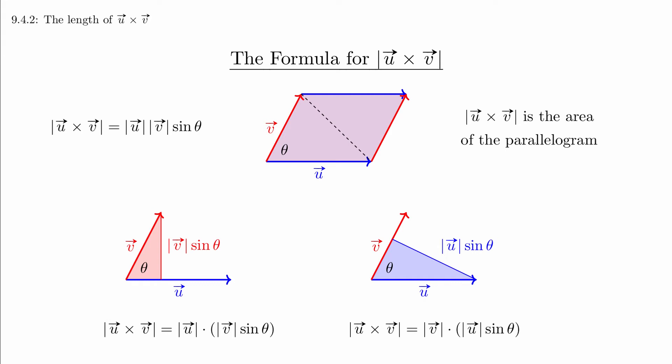We can also draw a triangle by connecting the tips of the vectors, and the area of this triangle is half the length of the cross product because it's half the area of the parallelogram. This will be helpful when working through some of the exercises.